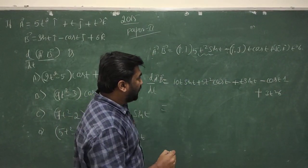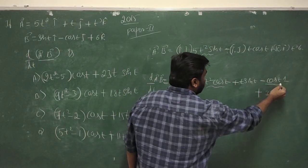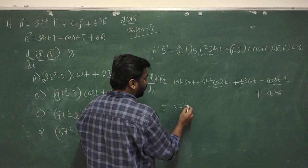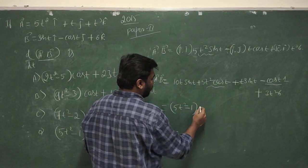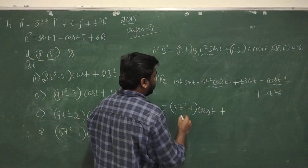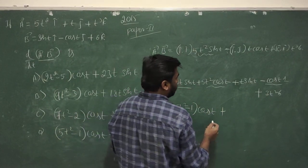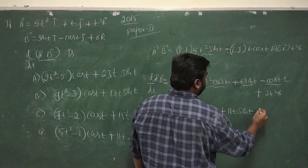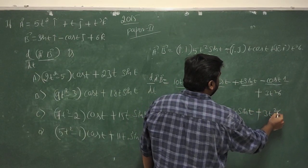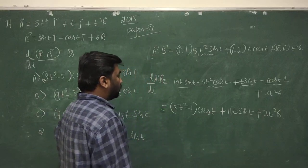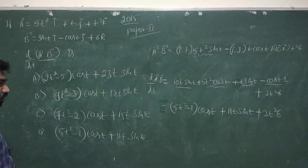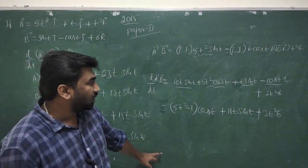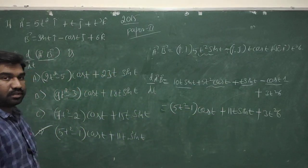Taking similar terms together: cos(t) terms give (5t² minus 1) cos(t), and sin(t) terms give 10t sin(t) plus t sin(t) equals 11t sin(t), plus 18t². So option B is eliminated and the correct option does not include the Gaussian 3t² 6 form — this is the correct answer.